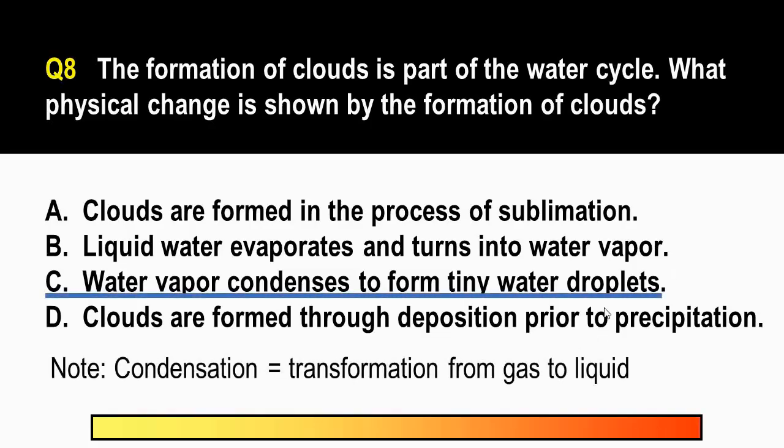The correct answer is letter C. So the physical change that we see in the formation of clouds is condensation, which is the change from gas to liquids. So ano ba yung nangyayari in the formation of clouds? Clouds are formed when the warm and moist air rises in the atmosphere and then the water vapor in the air condenses to form tiny water droplets, which we see as clouds. Ngayon, pag masyado na malaki yung water droplets na ito, these droplets then fall to the ground and that's known as precipitation.